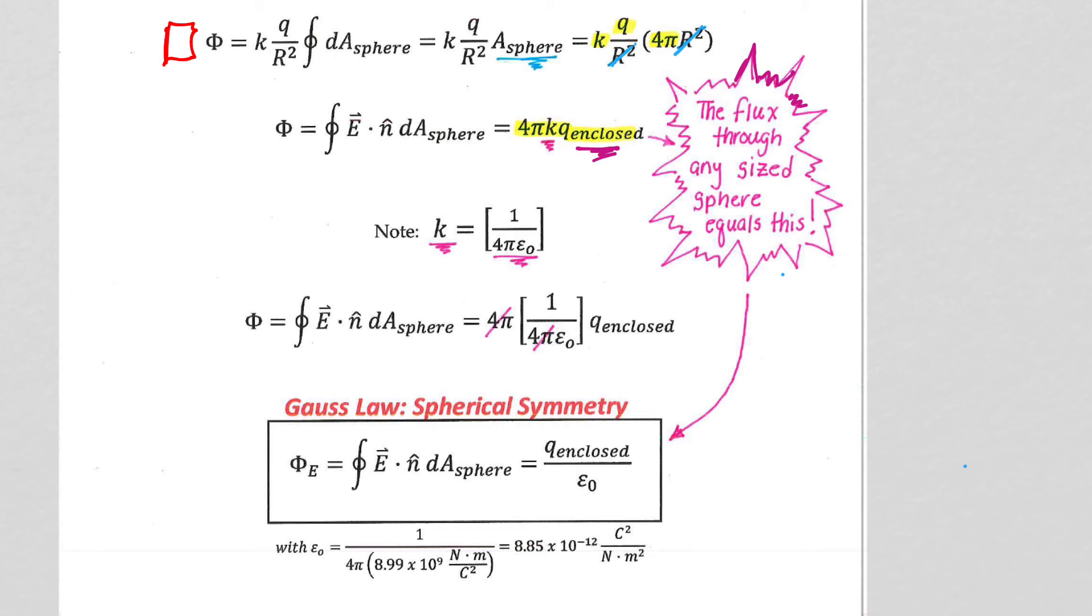We know that k is 1 on 4 pi epsilon naught, so we can simplify our calculation, and that's what we do. So, we simplify our calculation. The 4 pi's cancel out, as is shown here.